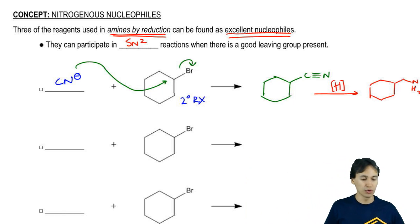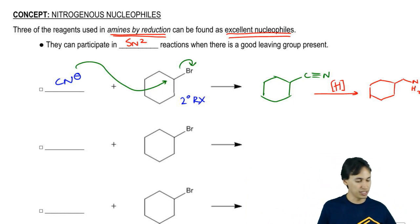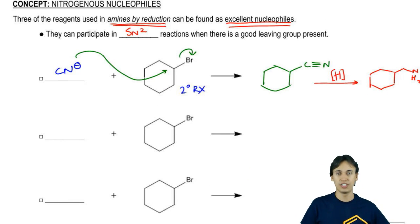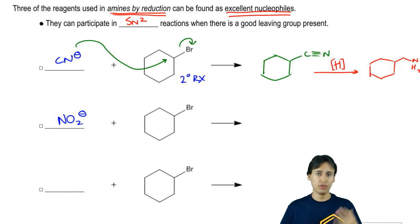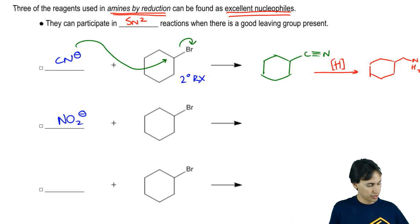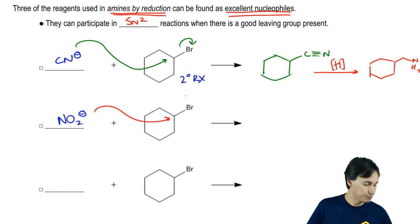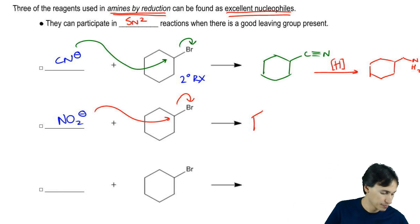Now I'm going to show you some other ones. So CN is a possibility. Can you think of any others? How about NO2 negative? NO2 negative is a strong nucleophile that we've used before. It can also do a backside attack. We would get a nitro group. So how can we reduce nitro into an amine?